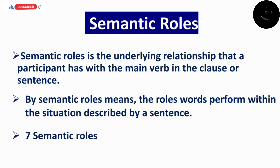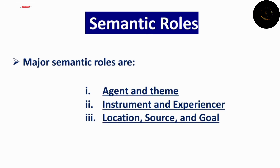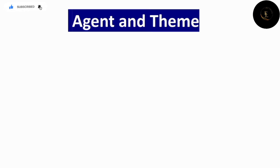7 main semantic roles ہوتے ہیں، ویسے تو 9 بھی ہوتے ہیں، 11 بھی ہم discuss کر سکتے تھے، لیکن جو main roles ہیں وہ آج ہم discuss کریں گے۔ وہ ہیں: agent, theme, instrument, experiencer, location, source, اور goal۔ یہ 7 roles آج ہم discuss کریں گے۔